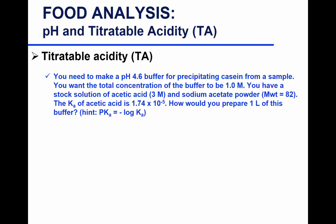For the acid solution: apply C₁V₁ = C₂V₂. We have a 3 molar stock and want 1 molar final in 1000 mL. So 3 M × x mL = 1 M × 1000 mL. Solving gives x = 333 milliliters. Take 333 mL of the 3 molar acetic acid stock and make up to 1 liter.